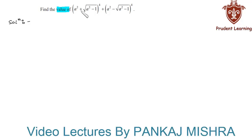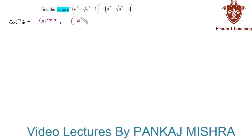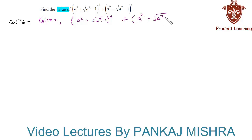Find the value of (a² + √(a²-1))⁴ plus (a² - √(a²-1))⁴.